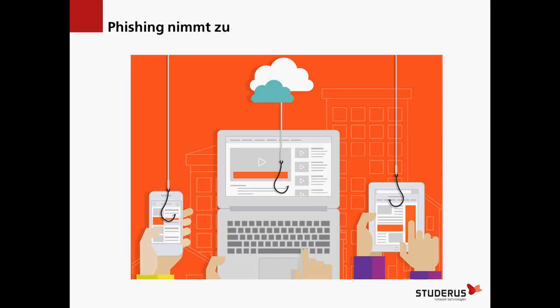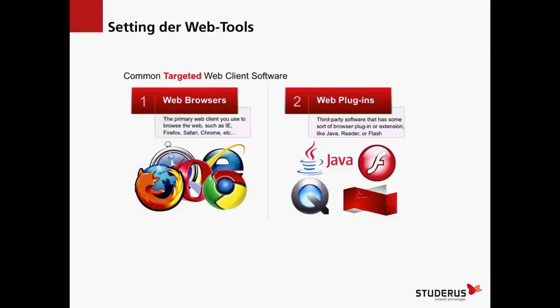Phishing ist natürlich nicht nur ein Thema auf einem Desktop-Rechner. Immer mehr mobile Geräte sind im Einsatz. Auf einem Desktop-Rechner hat man meistens ein Antivirenprogramm installiert, auf mobilen Geräten ist das noch nicht ganz so verbreitet. Also ist es sinnvoll, wenn man wirklich am Gateway vom Netzwerk etwas dagegen unternehmen kann und dort versucht, einen Riegel zu schieben.